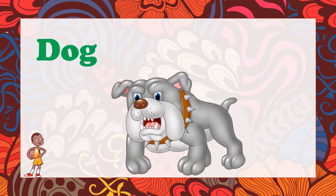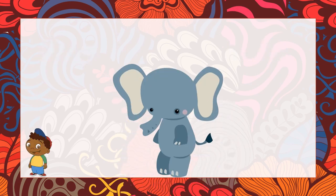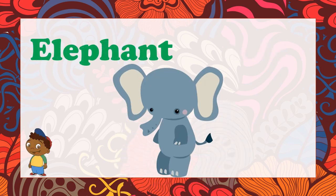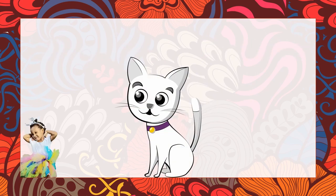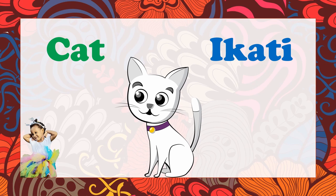And this is a dog. A dog is Inja — Inja. A dog is Inja in Zulu. This is an elephant. An elephant in Zulu is Injovu. Injovu. And next we have a cat. What's a cat in isiZulu? Ikati — that was an easy one, right kids? Ikati. Well done.